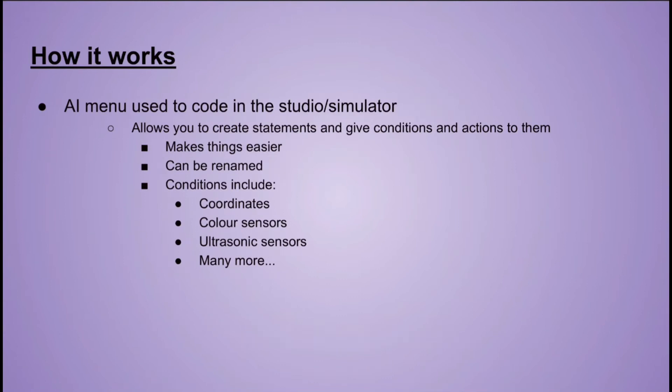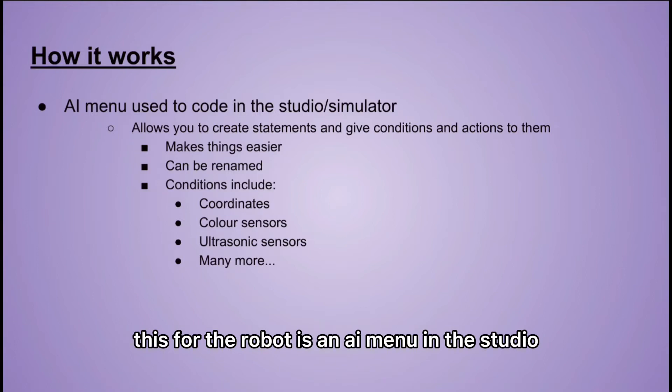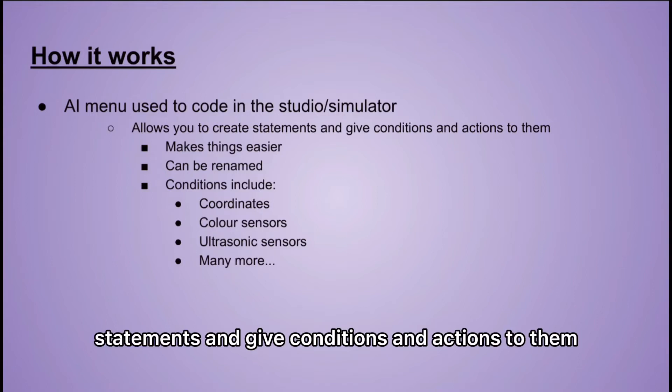The basic algorithm for my robot is telling it to avoid the sides of the map, traps, obstacles and swamps. The tool that I use to code this is an AI menu in the studio or simulator itself where you can create statements and give conditions and actions to them.